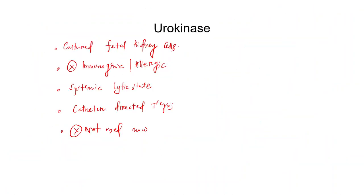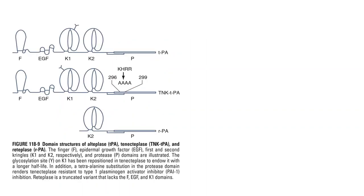These drugs discussed so far are all fibrin non-selective. Now we will come to the tissue plasminogen activator group — tPA. These are somewhat fibrin selective. The three drugs are: alteplase, tenecteplase, and reteplase.